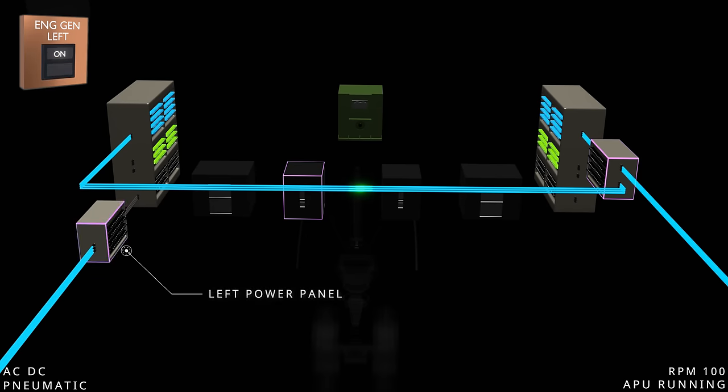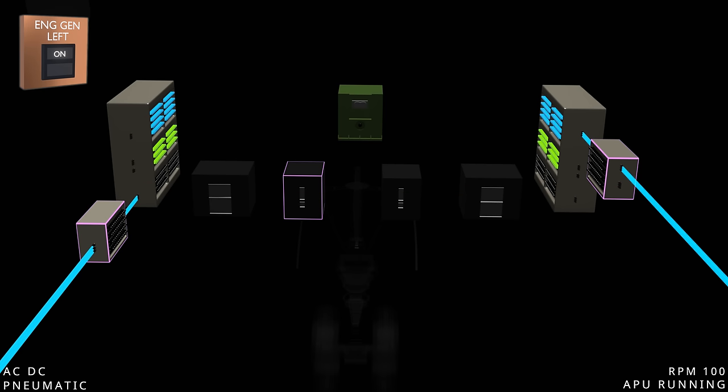The load management system uses the left engine generator to power the left electrical buses, and the APU generator will continue to power the right buses. Since two generator sources are available, the non-essential buses are activated.